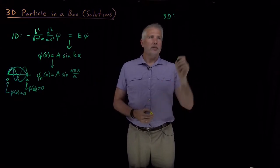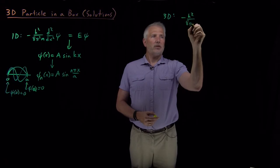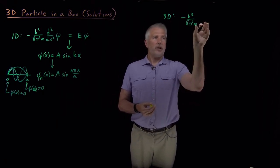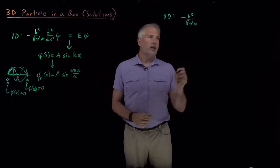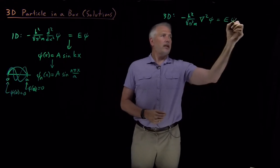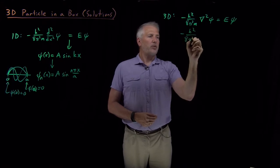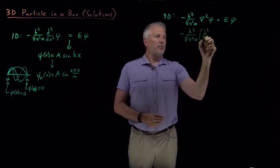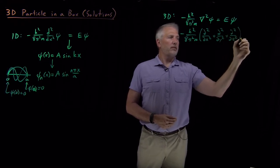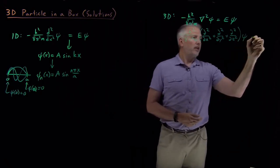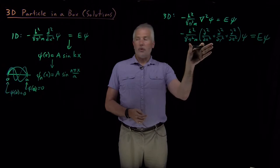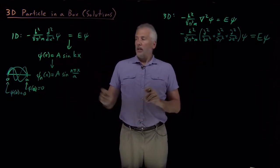We start by writing down Schrödinger's equation for the 3D particle in a box. We still assume that when the particle is inside the box there's no potential energy, so we still have just a kinetic energy operator. The only difference is that instead of having d²/dx², we need the full Laplacian — a fancy way of saying we need derivatives not just with respect to x, but also with respect to y and with respect to z.